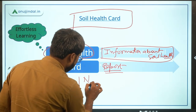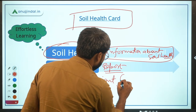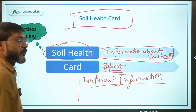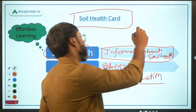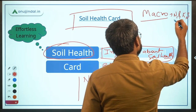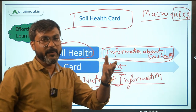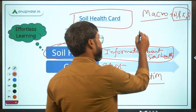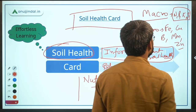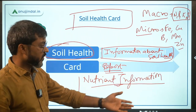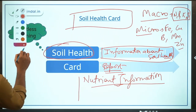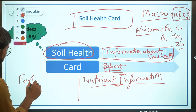The soil health card provides nutrient-related information — how many nutrients are present in the soil and how many need to be added. There are macronutrients such as nitrogen, phosphorus, potassium, and sulfur, and micronutrients like iron, copper, boron, manganese, and zinc. Additionally, pH information is provided, along with guidance on the usage of fertilizers — how much fertilizer a farmer should use in that particular area.